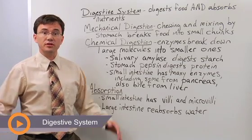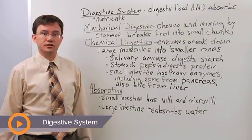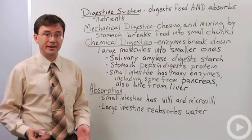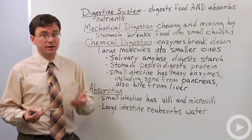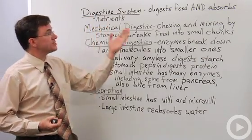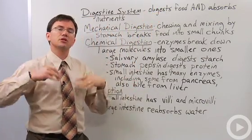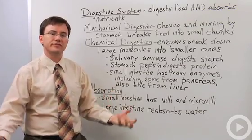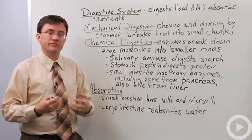The digestive system is one of the easier systems in biology to understand because you use it every day and you kind of pay attention to what you put in your mouth. Now the digestive system, obviously from its name, is involved in digesting food, but what a lot of students forget is that it's also involved in the absorption of the food.